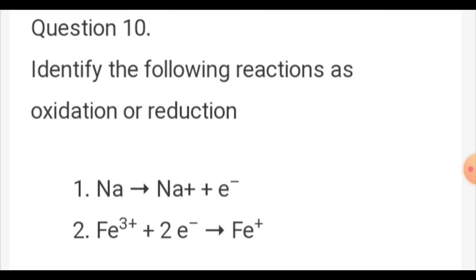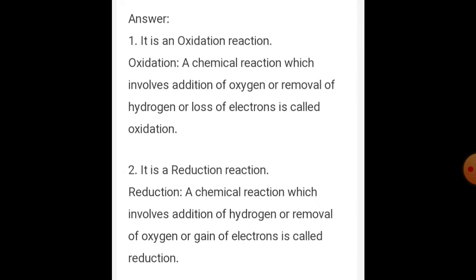Question number 10: identify the following reactions as oxidation or reduction. Na gives Na+ plus e- and Fe3+ plus 2e- gives Fe. The first reaction — Na losing an electron — is an oxidation reaction. Oxidation is the chemical reaction which involves removal of electrons. Reduction is the chemical reaction which involves gain of electrons or addition of hydrogen and removal of oxygen.